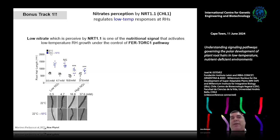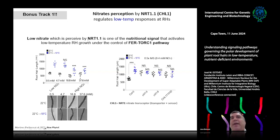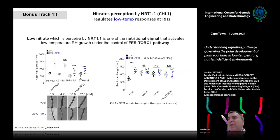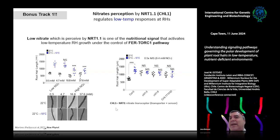As I showed, low temperature is linked to nitrate. We wondered if NRT1.1 — the nitrate transporter that also acts as a nitrate receptor, called a transceptor — is involved. With two mutants for NRT1.1 — a knockout and a phosphomimetic mutation that changes nitrate affinity — regardless of whether temperature is 22°C or 10°C, the same growth phenotype is observed. This indicates that this nitrate transceptor is also involved in this signaling pathway.